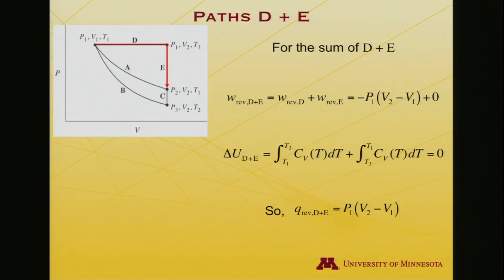So as it must be for a state function, delta U equals zero along this path, but clearly along paths B and C, we got a different answer than we did along path A for the work and for the heat. All right, we've done two. Let's embark on our last PV journey. We're going to consider the sum of paths D and E, and we're getting good at this, so I'm just going to do them both at the same time, basically.